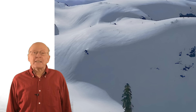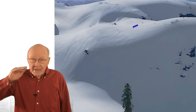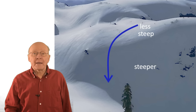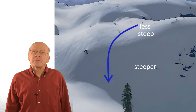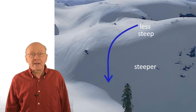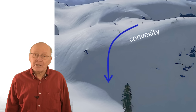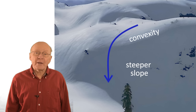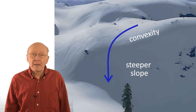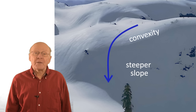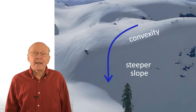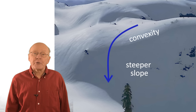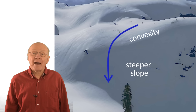A convexity is where the slope gets steeper while you're traveling down the fall line. So there are two parts to a convex slope: the convexity near the top, and the steeper slope below the convexity.